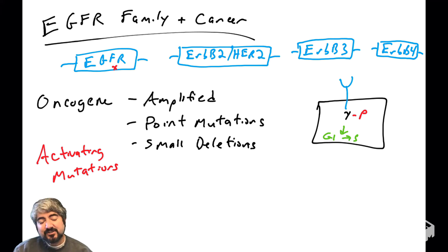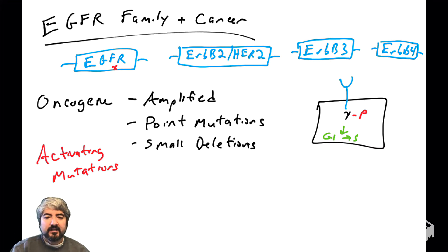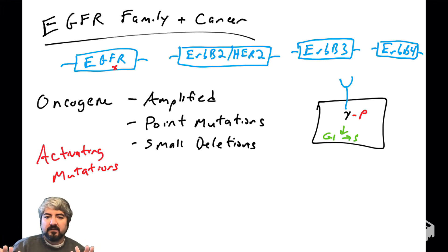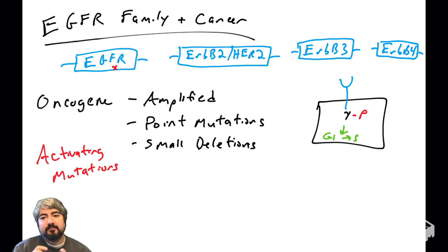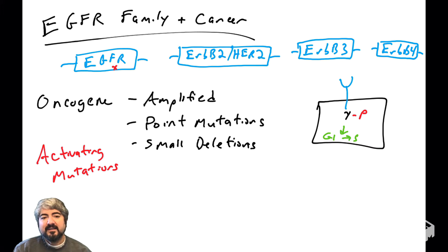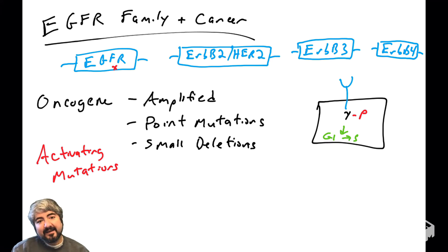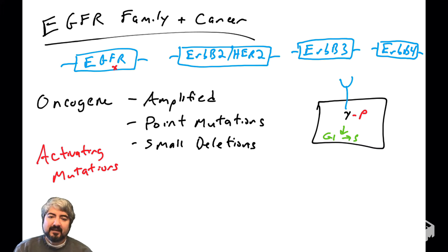A small deletion can also activate the kinase domain of the receptor, causing the protein to change its 3D structure. You might think a deletion would destroy the activity of a protein, but that's not true — if part of it is deleted, it's not regulated properly. For EGFR family members, these small deletions lead to the incorrect activation of the kinase domain. So all of these mutations — amplification, point mutations, small deletions — are activating mutations. They don't destroy the enzyme's activity; they activate it.